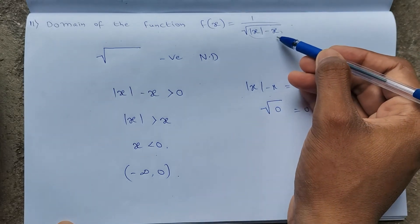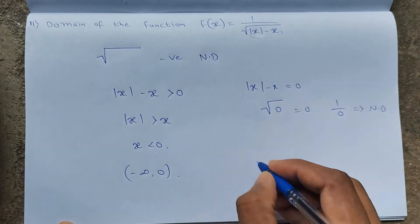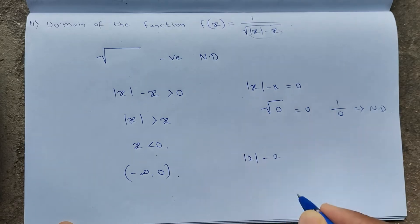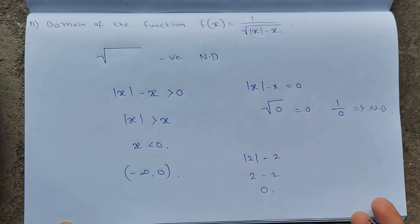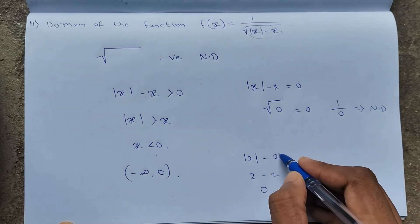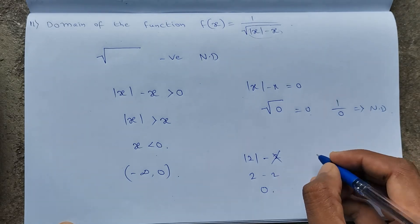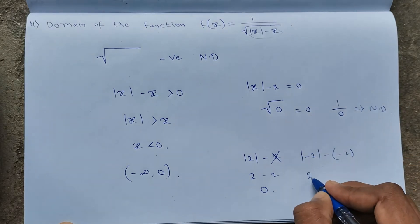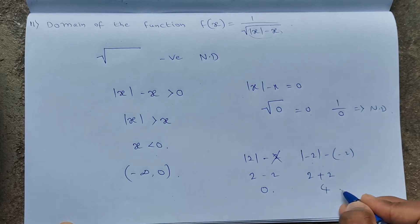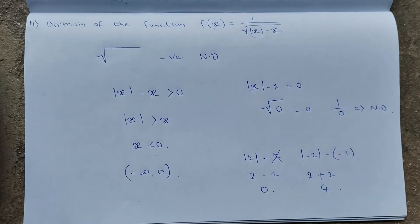If we substitute a positive number, for example x = 2: |2| - 2 = 2 - 2 = 0, so 1/0 is not defined. So it should not be a positive number. Taking x = -2: |-2| - (-2) = 2 + 2 = 4, which is defined. So x must be less than 0, and the domain is (−∞, 0).